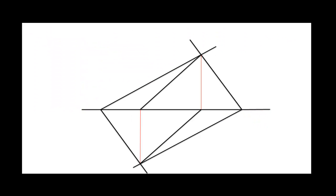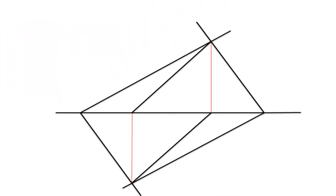Now that we have found our line of intersection in our plan and elevation, we need to find the dihedral angle between the two planes.